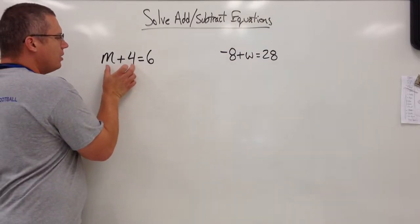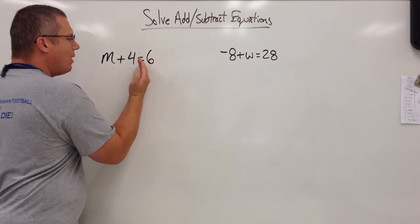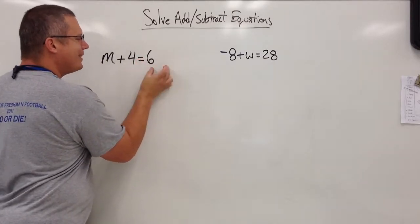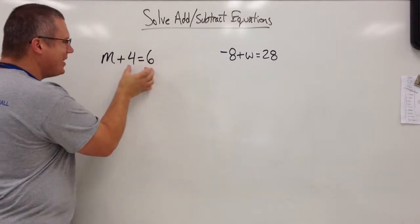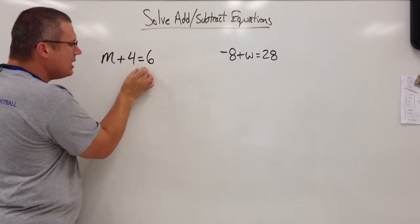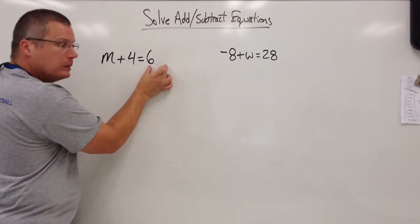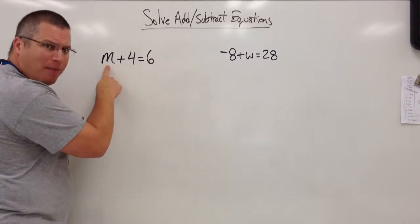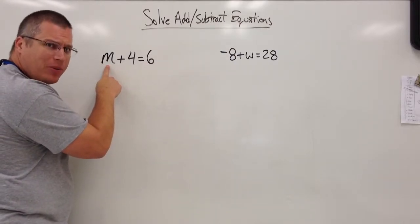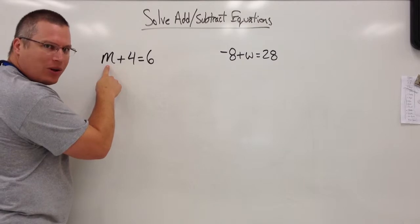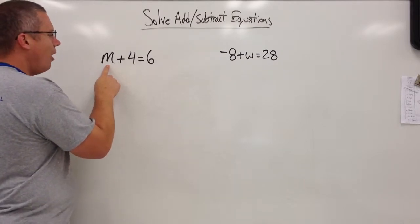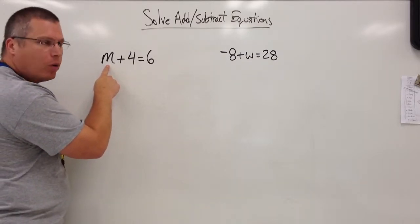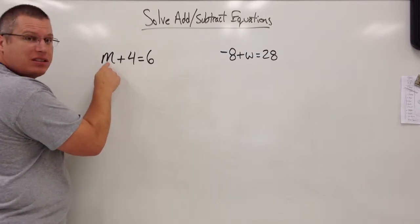An equation has something on one side with an equal sign in the middle and something on the other side. The left piece is equal to the right piece. Our job when we look at this is there's a variable, a number that we don't know what the value is. We know it's a number, we just don't know how much it is. So our job is to figure out or solve what is this value worth.